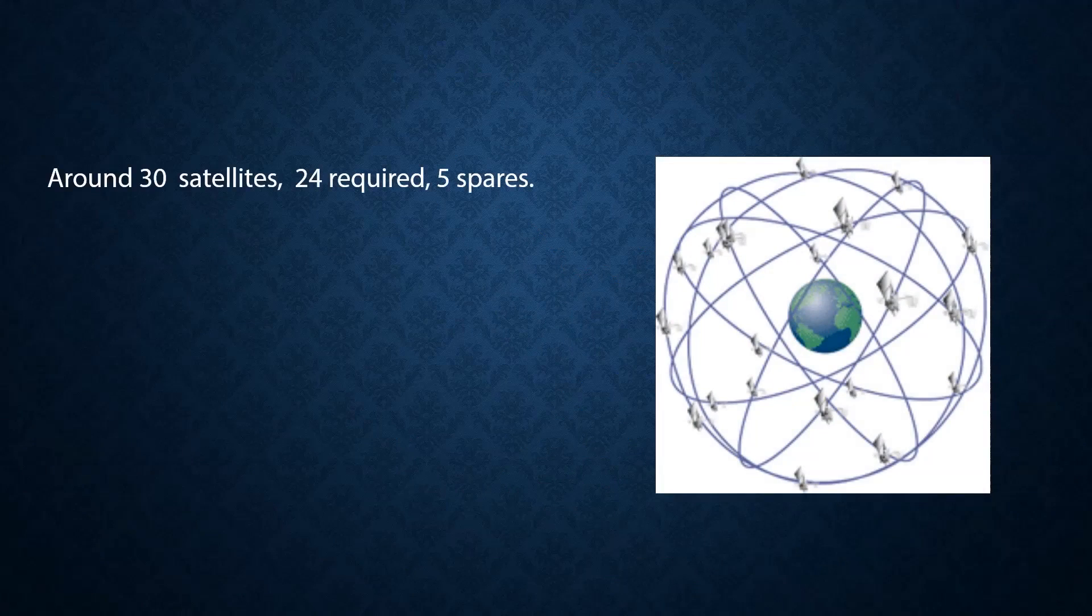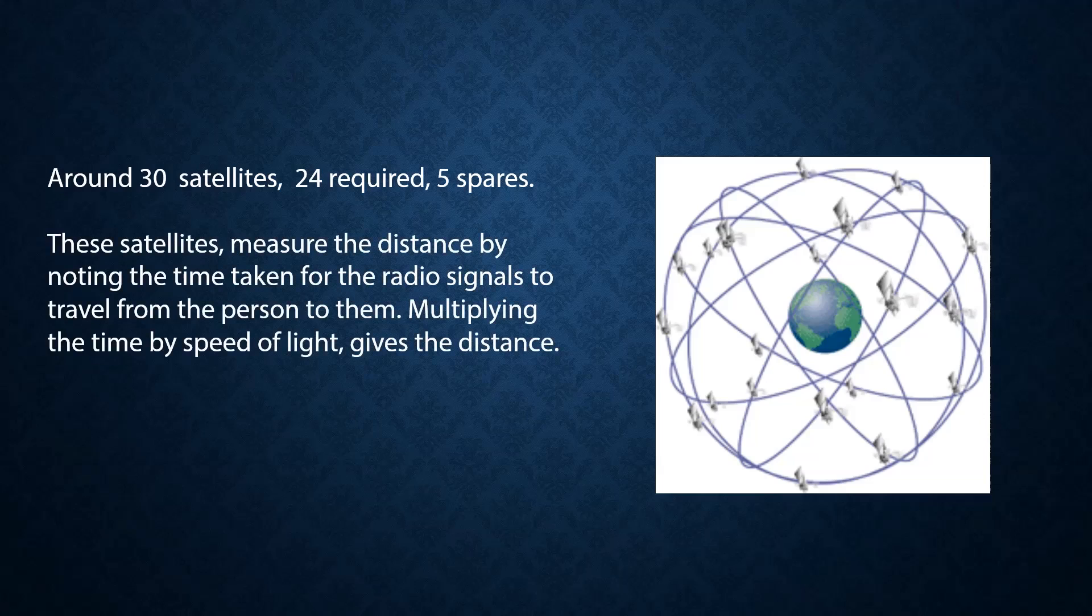So now we have around 30 satellites, out of which 24 is required and the rest are spares. Why we have 30 satellites is because at any point of time, we require at least 24 satellites so that we can have 4 satellites in our view. The 4 satellites can measure the distances from our position to their position. Had there been only 4 satellites, then when these 4 satellites were on the opposite half of the earth, when they could not see the other side of the earth, then it would become very difficult for them to give the exact position. These satellites measure the distance by noting the time taken for the radio signals to travel from the person to them. Multiplying the time by the speed of light gives the distance.